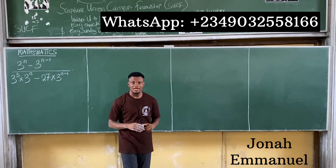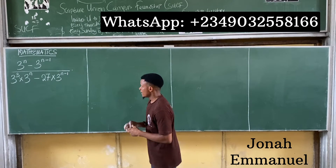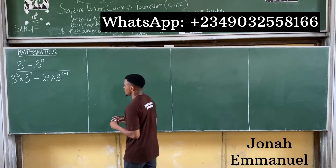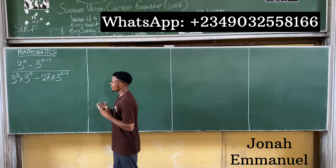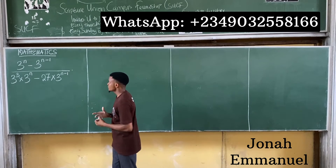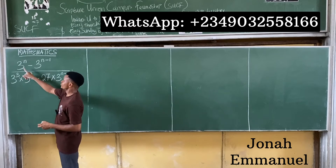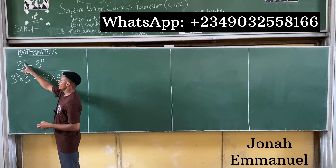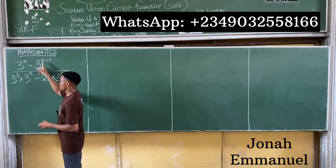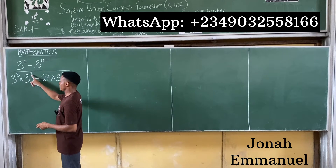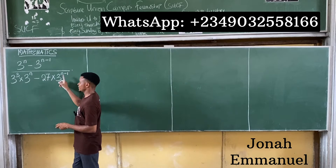So to get this done, how do we solve this? First, let's look at this critically. We can see that we have 3 to the power n here, 3 to the power n here, 3 to the power n here, and also 3 to the power n here.